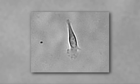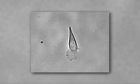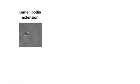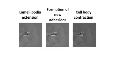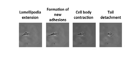Cell migration may be divided into four mechanically separate steps: holopodial extension, formation of new adhesions, cell body contraction, and lastly tail detachment.